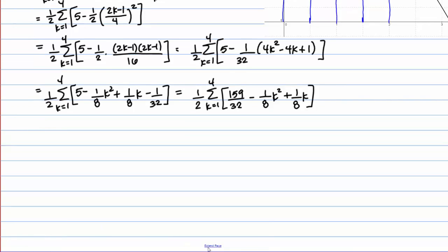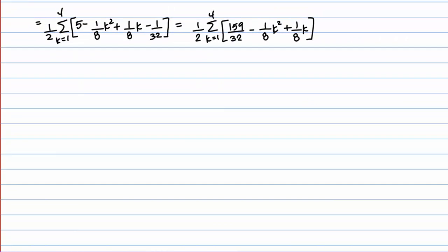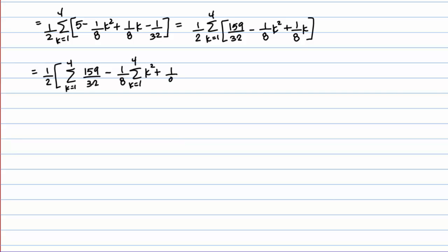Now I know how to use a sum formula on each of these pieces. I've got a constant, a k squared term, and a k term. To make it more straightforward, we can break this up. The one half is in front of everything, but I can break the sum up term by term: the sum of 159 over 32, then pulling constant multiples out front, minus one eighth times the sum of k squared, plus one eighth times the sum of k. That's the perfect form to use the sum formulas on.